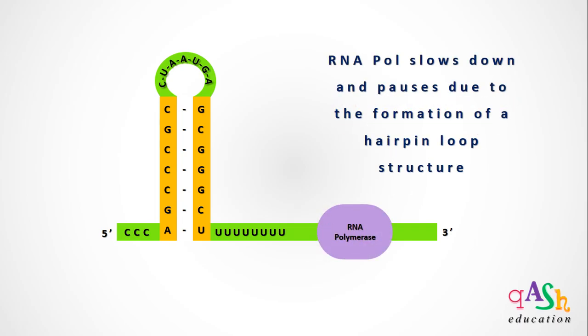This hairpin loop structure slows down the movement of RNA polymerase along the mRNA transcript, halting the process of transcription.